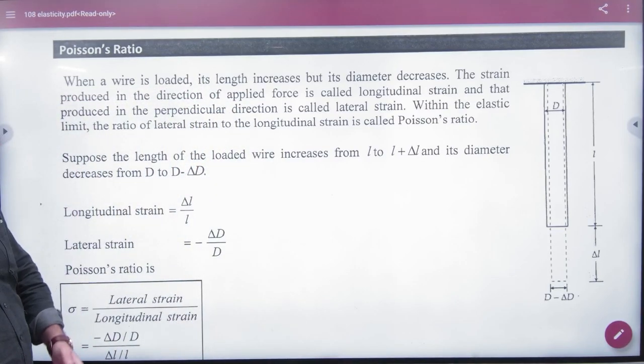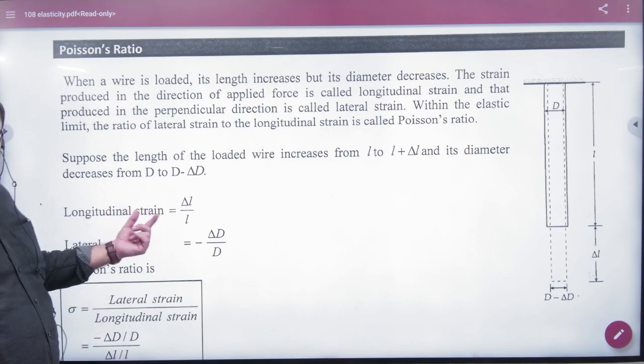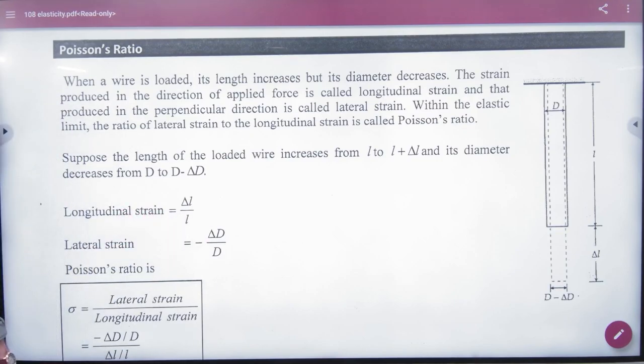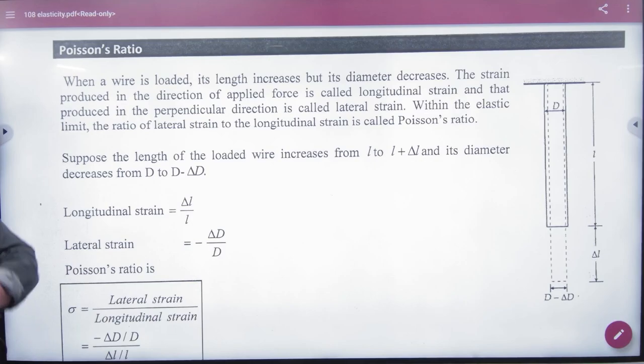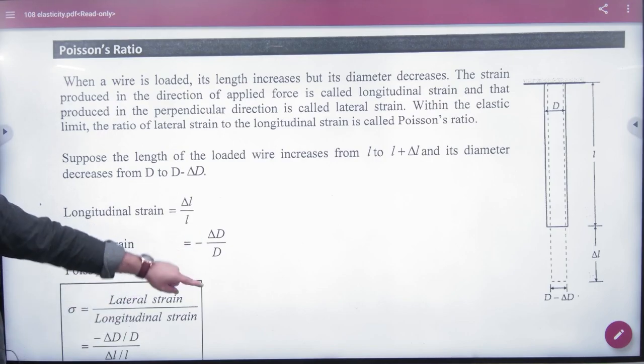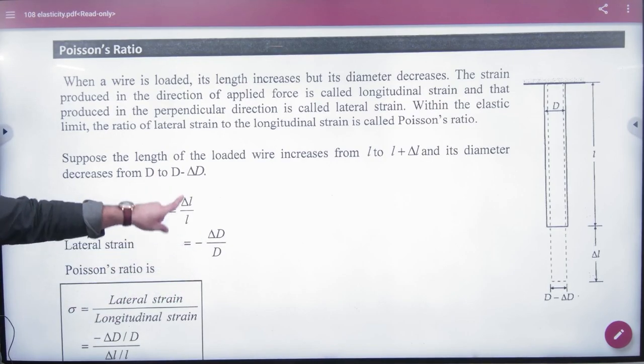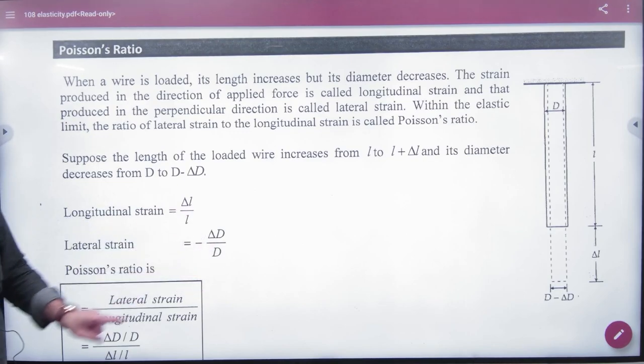When you increase the length, which strain in the body? Longitudinal, delta L by L. And when you have strain in the body, the diameter is also reduced. What is the strain of the diameter? Delta D by D. And because the length is increasing, the diameter is reduced. So what is the sign? Negative.